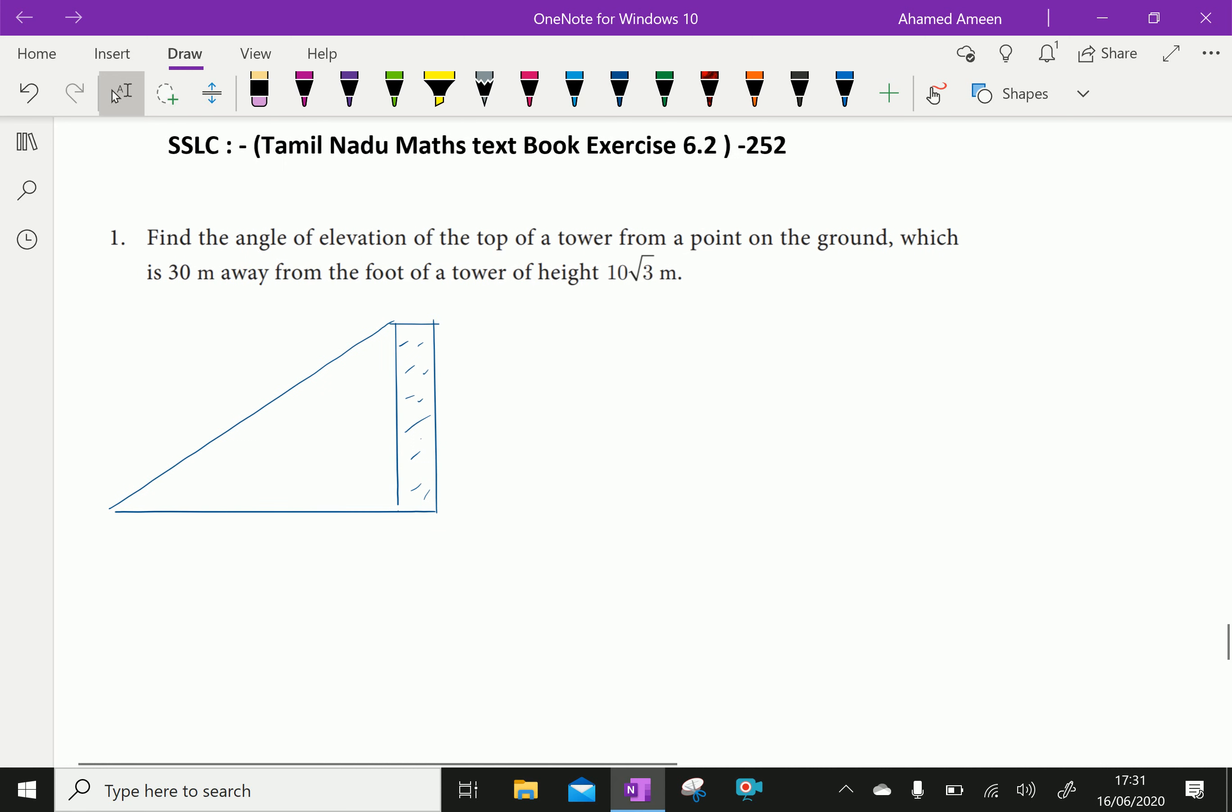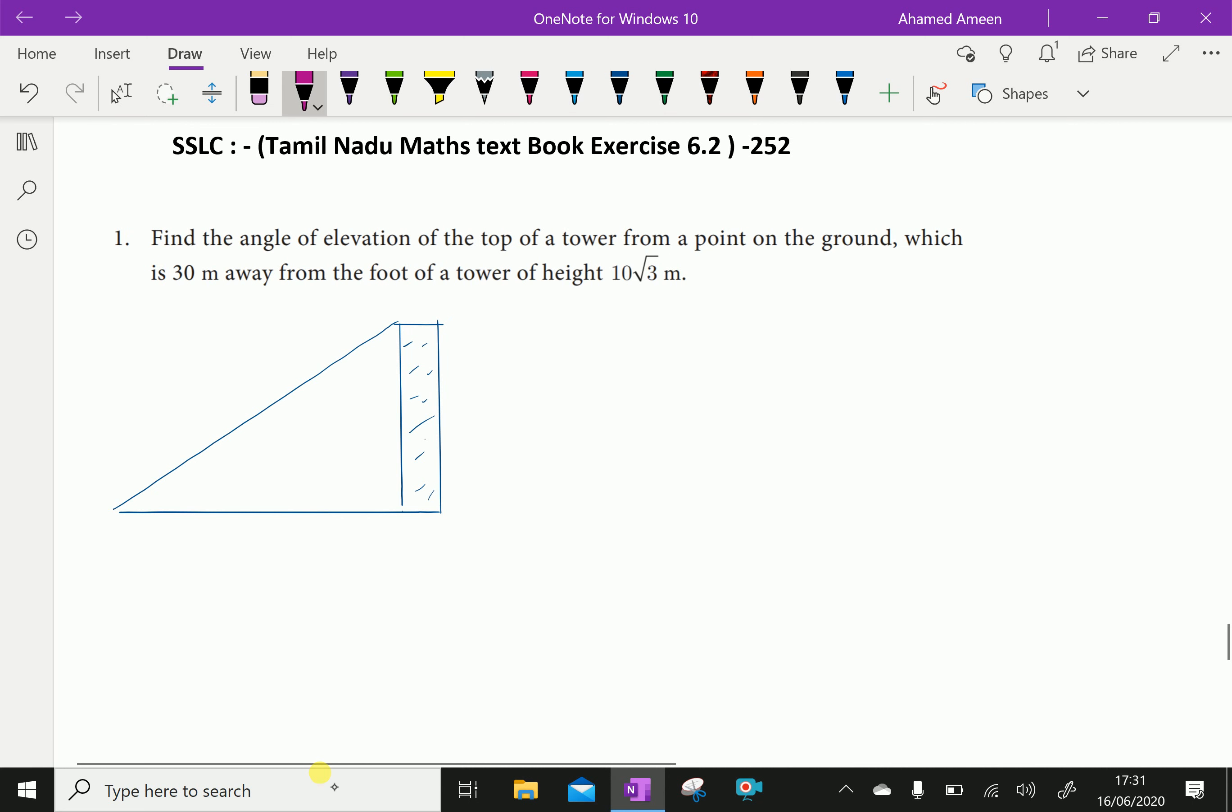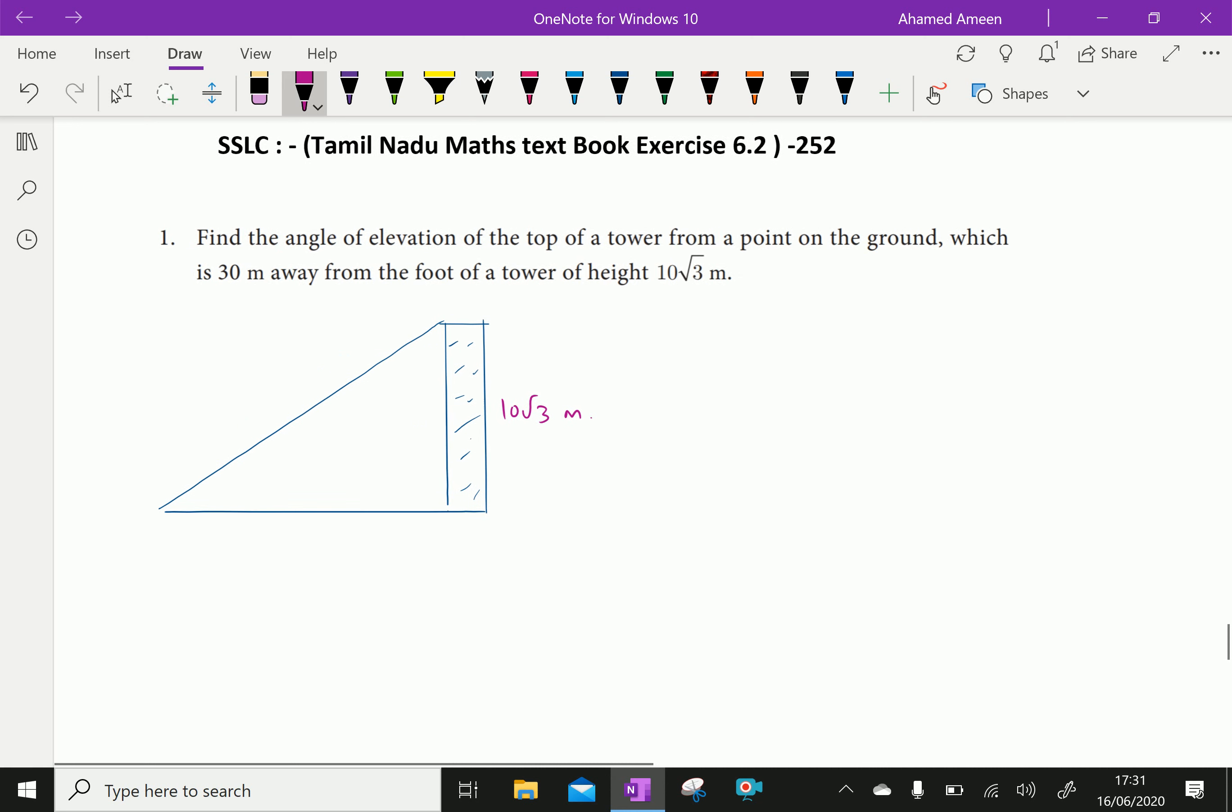Here, the height of the tower is 10 root 3 meter, and the angle of elevation we have to find, and 30 meter away, that position, it is 30 meter away.